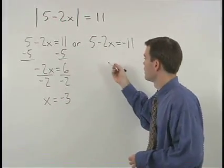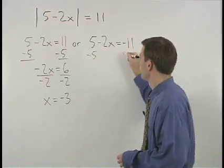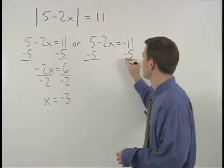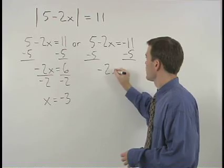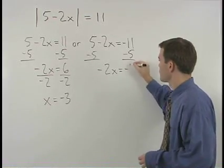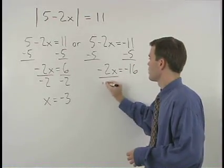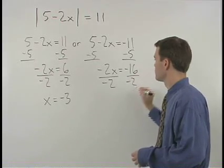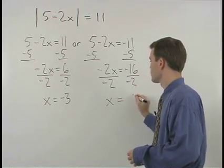On the right, we also subtract 5 from both sides to get negative 2x equals negative 16. Divide both sides by negative 2 and x equals 8.